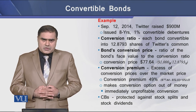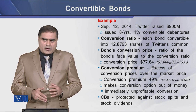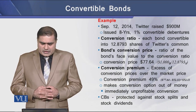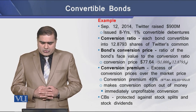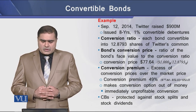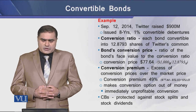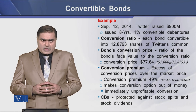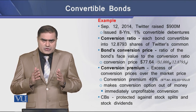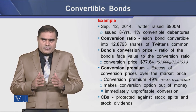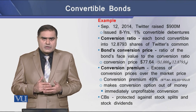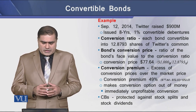To determine the conversion price on this convertible bond, it is the ratio of the bond's face value to the conversion ratio. This means we divide the face value of the bond by the number of shares to be converted.